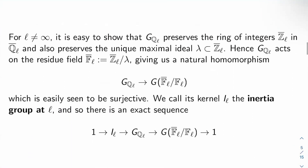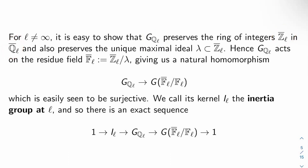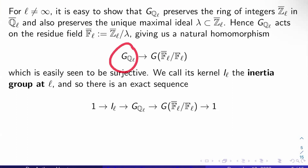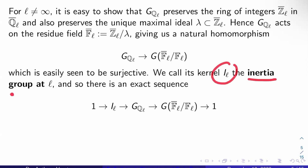Now, inertia. For a prime L that isn't infinity, it's easy to show that the Galois group at L preserves the ring of integers Z-bar_L in Q-bar_L, and also preserves the unique maximal ideal lambda in Z-bar_L. The decomposition group at L acts on the residue field F-bar_L = Z-bar_L mod lambda. This gives a natural map from the decomposition group at L to the Galois group of F-bar_L over F_L, and this map is surjective. The kernel, I_L, is called the inertia group at L.